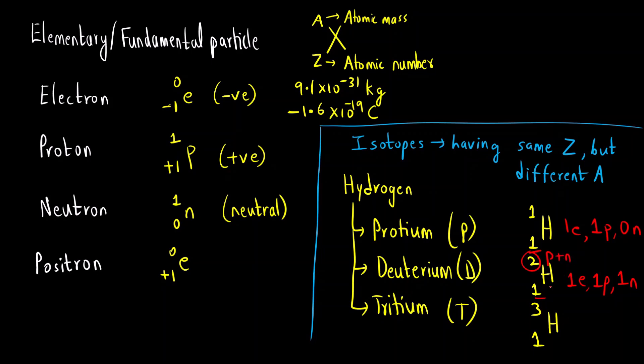Atomic mass number is sum of proton plus neutron. Tritium has one electron, one proton and two neutron. So these are the isotopes of hydrogen.